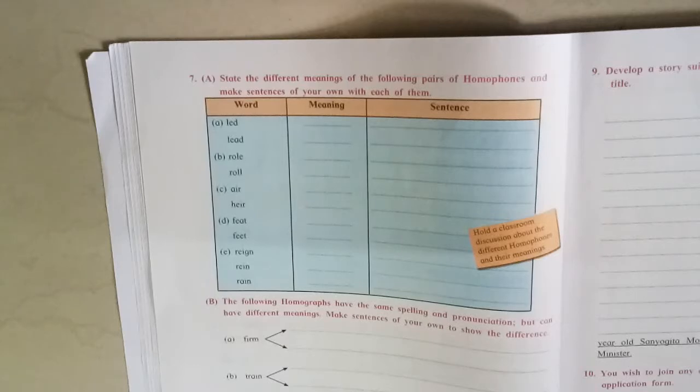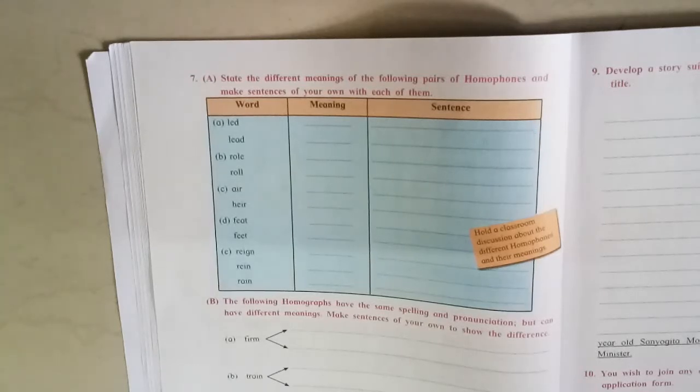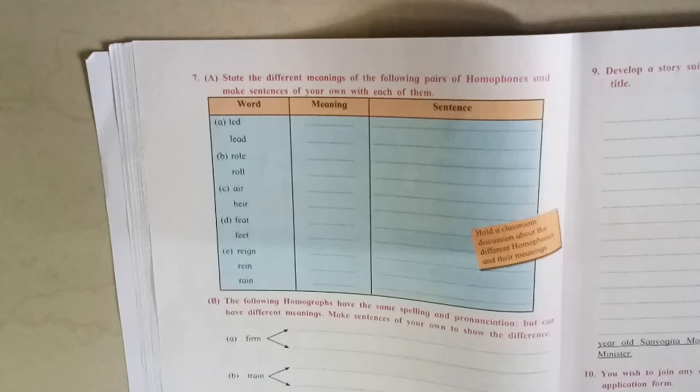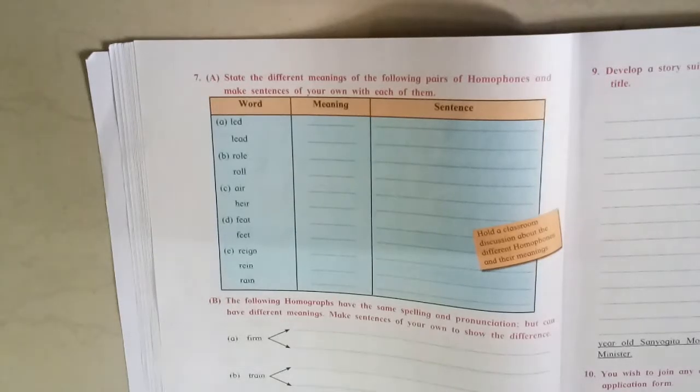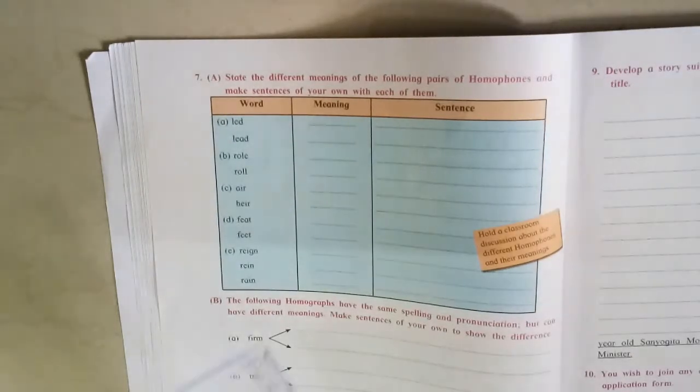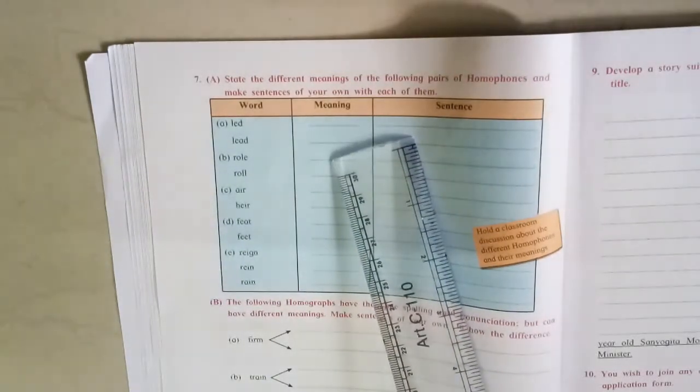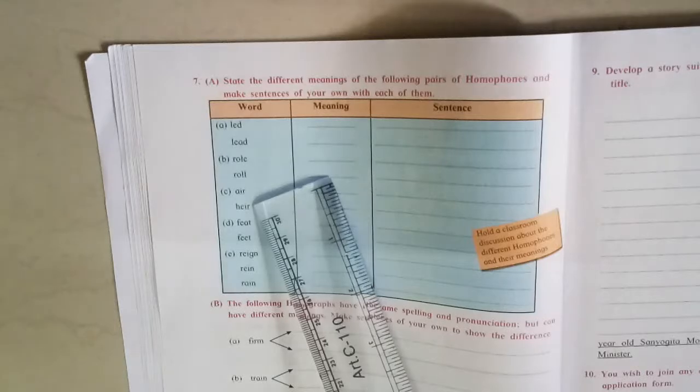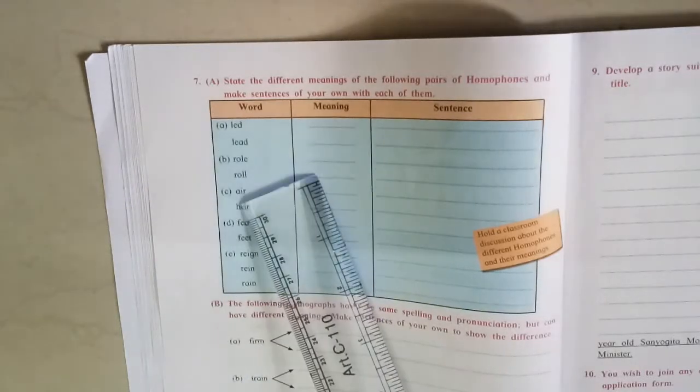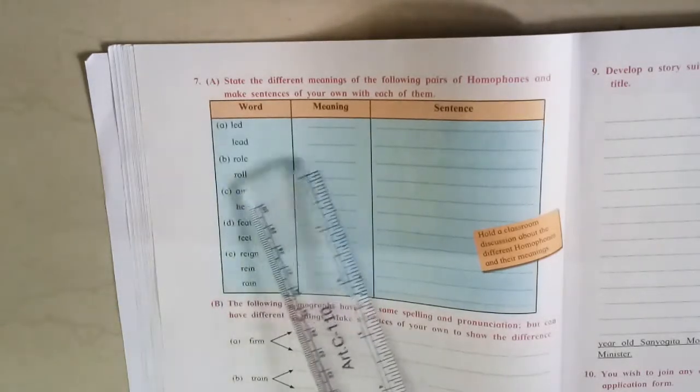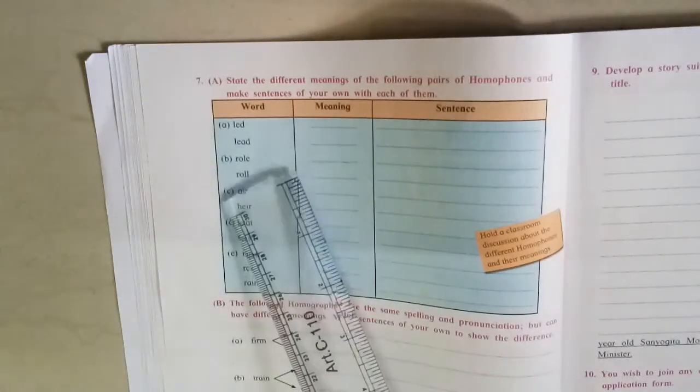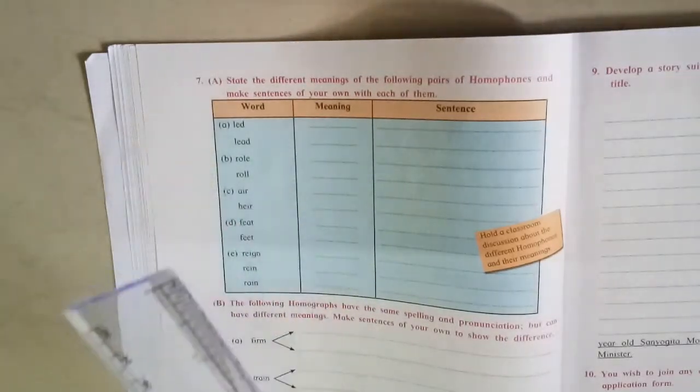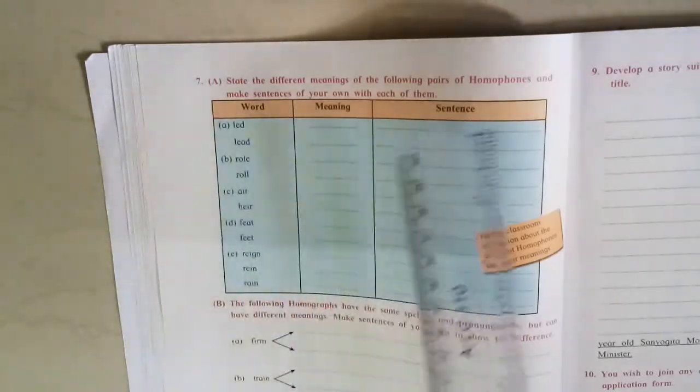Now page number 20. Homophones and homographs. State the different meanings of following pairs of homophones. Homophones means what? Two different words, meaning also different, but pronunciation same. That means homophones.